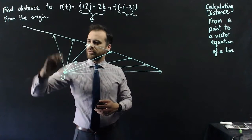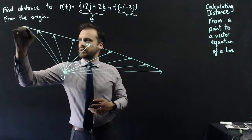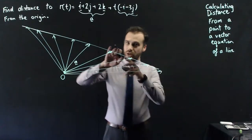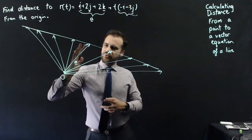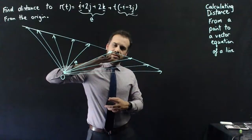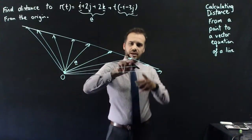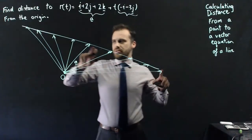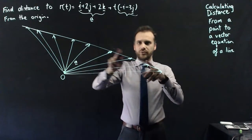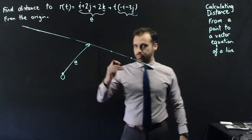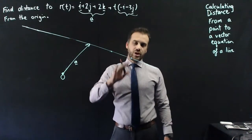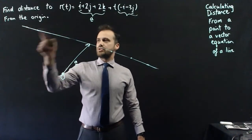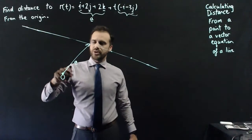So a vector equation of a line is not a line. It's an infinite number of vectors moving along there. The vector equation of a line describes the endpoints of all of those vectors. So now that we have that cleared up, we can solve this question relatively easily. What we're looking for is the distance to this vector equation from the origin.